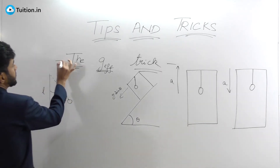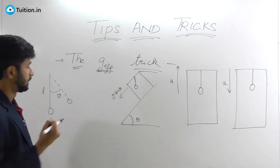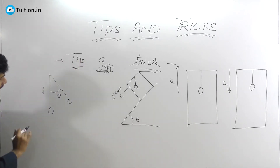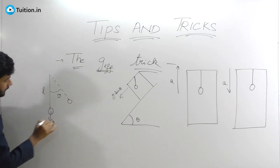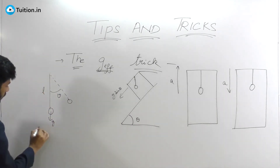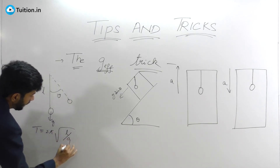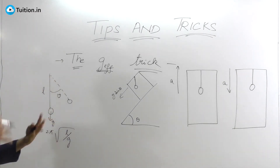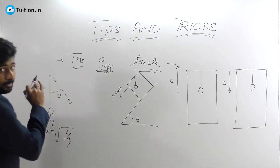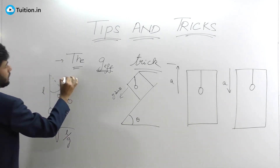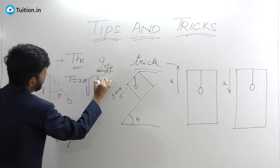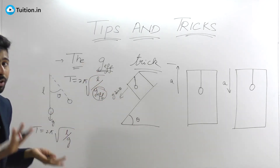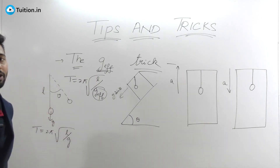Let's look at the g-effective trick in SHM — a very useful trick to find the time period of a simple pendulum. The bob has acceleration g downwards, length l, and the standard formula for time period is 2π√(l/g). This is the formula when nothing else is happening. The more useful formula we will use is T = 2π√(l/g_eff), where g-effective is the net acceleration resulting from the scenario in which the simple pendulum is placed.